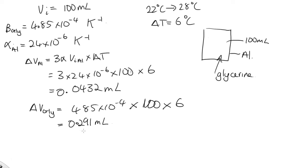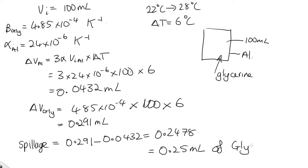So the change in volume of the glycerin is larger than for the aluminum. So the spillage will be the difference between these two. It would be 0.291 minus 0.0432. Solving that, we end up with 0.2478. We should just give our answer to two significant figures. So 0.25 milliliters of glycerin will spill.